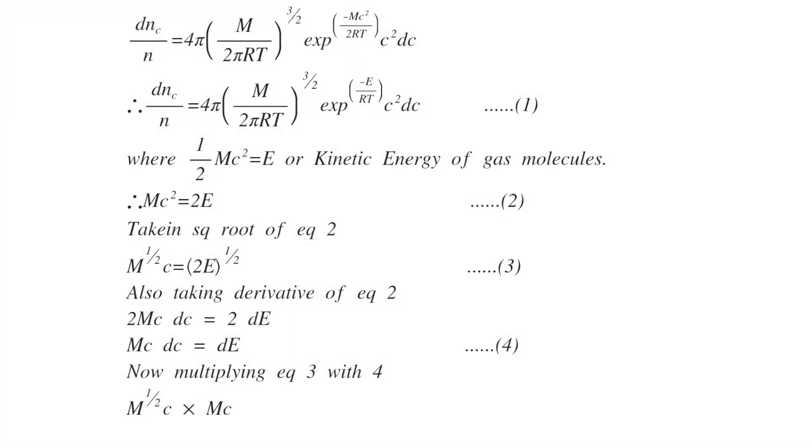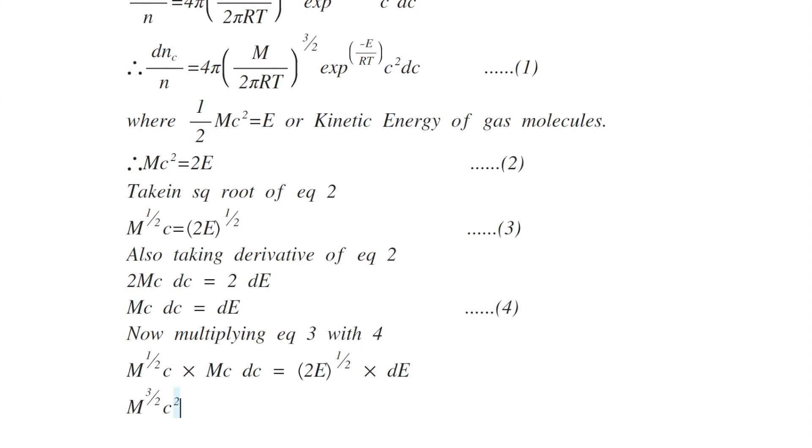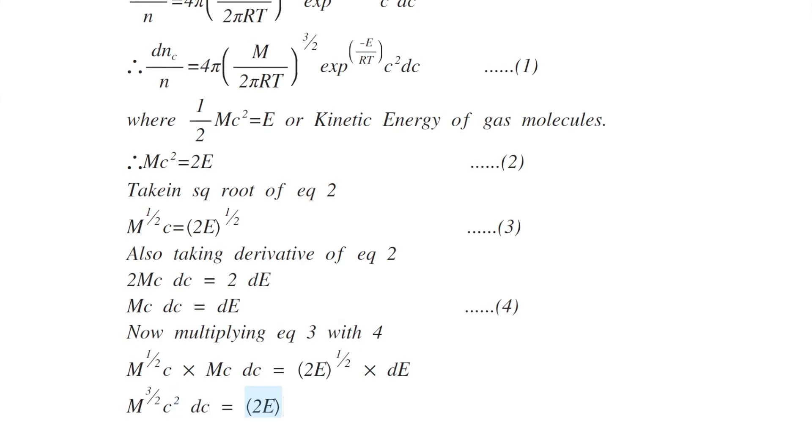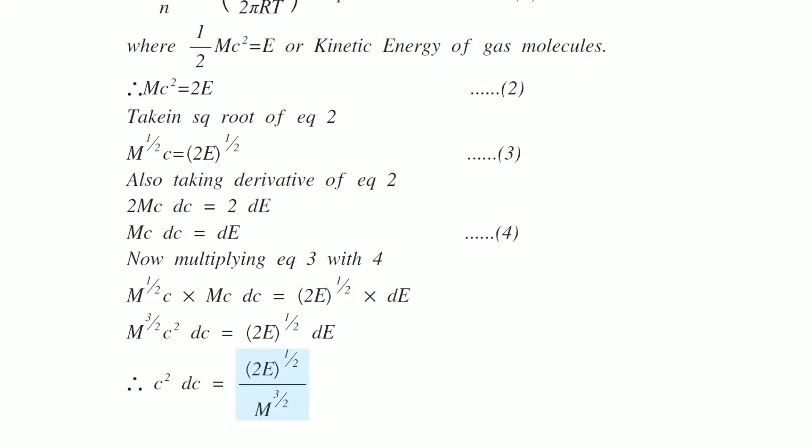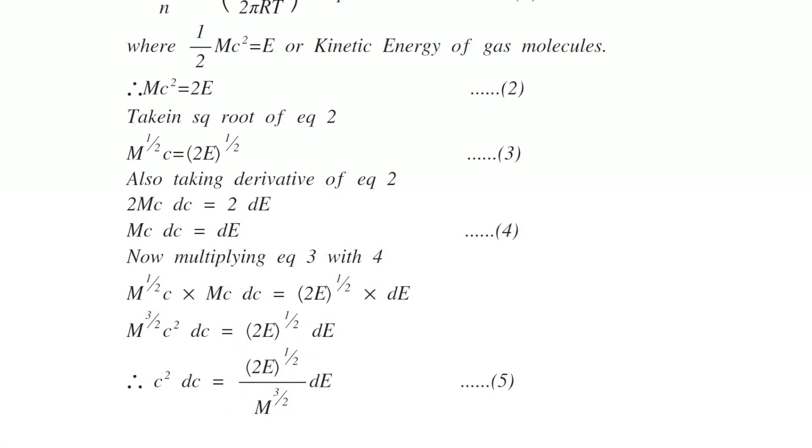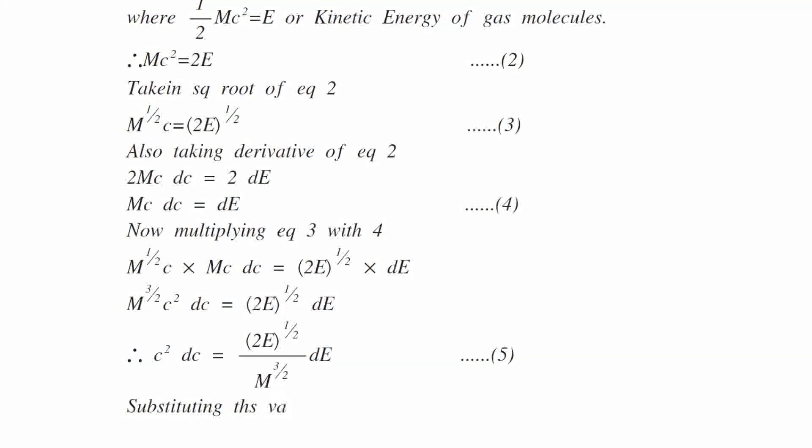Now multiplying equation number 3 with number 4, m to the power half c into mc dc equals 2E to the half into dE. Simplifying the equation you get m to the power 3 by 2, c square dc equals 2E to the half divided by m to the power 3 by 2, dE. This is equation number 5.